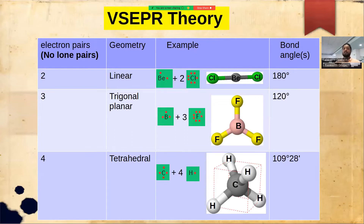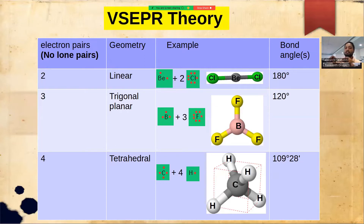If there are three electron pairs, the geometry is planar triangular — the molecule lies in a plane in the form of a triangle. As an example, BF₃ (boron trifluoride): boron has three electrons in its valence shell, which are shared with three fluorine atoms. These bonds lie in a plane in the form of a triangle. The F–B–F bond angle is 120 degrees. BF₃ is perfectly planar, lying in a single plane.